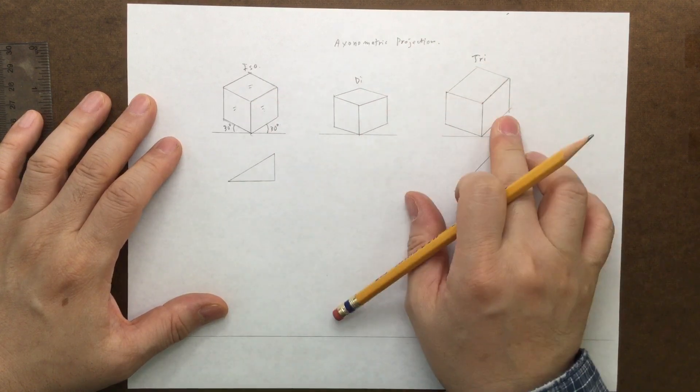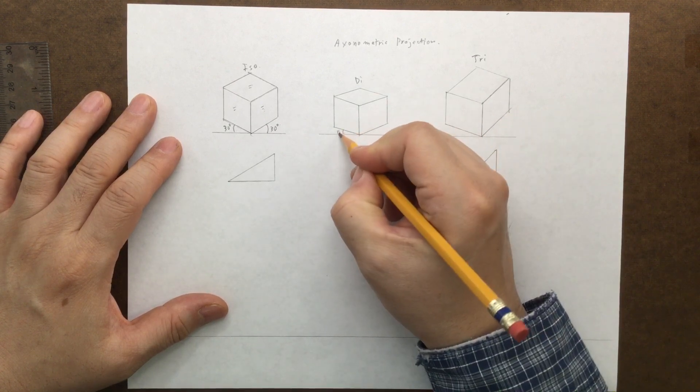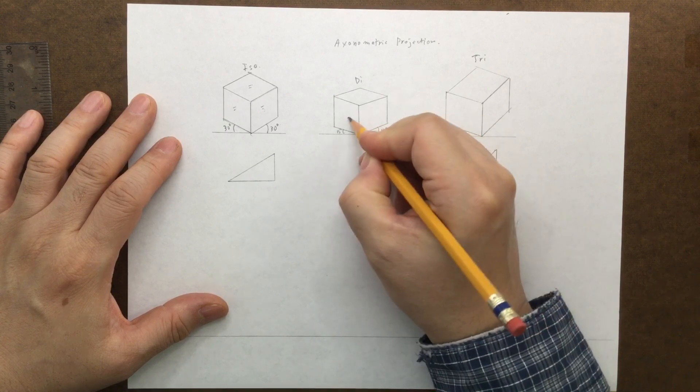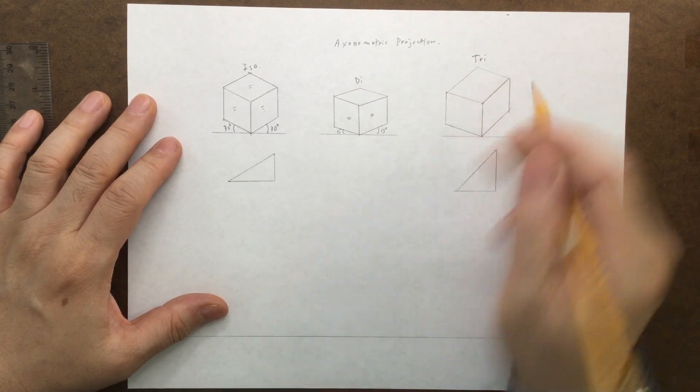Starting with the dimetric, they are different because of the angle. So this one's 15. So these two sides will be equal, but not the top. And this one has all different.